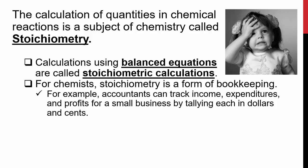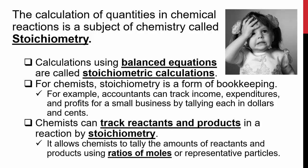For example, accountants can track income, expenditures, and profits for a small business by tallying each in dollars and cents. Chemists can track reactants and products in a reaction by stoichiometry. It allows chemists to tally the amount of reactants and products using ratio of moles or representative particles.